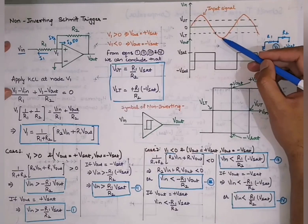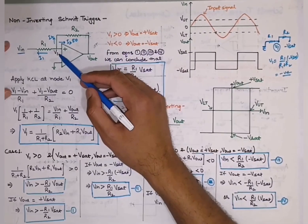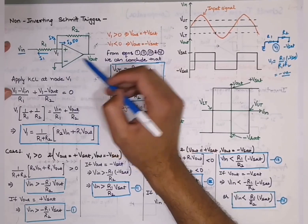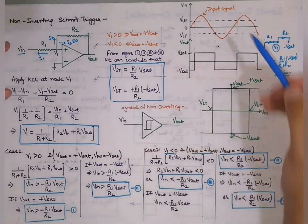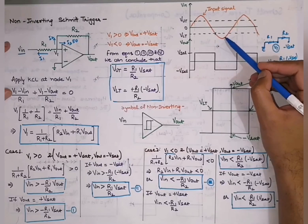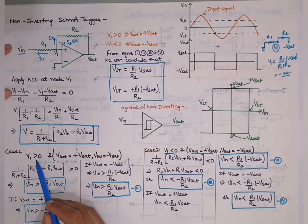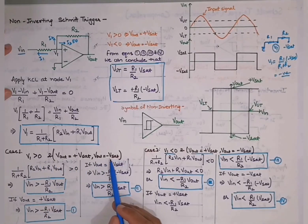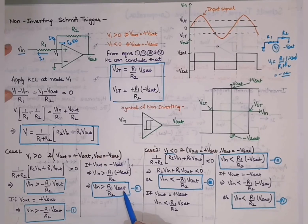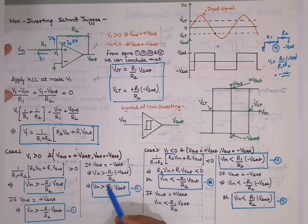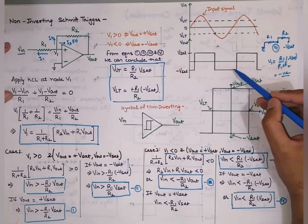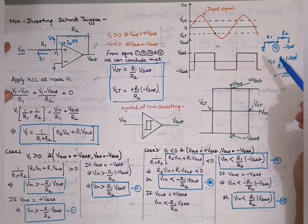After the output reaches −Vsat, for V1 to go back above 0 and Vout to return to +Vsat, the previous Vout is −Vsat. Therefore, the condition is again that Vin must exceed the upper threshold (R1/R2)·Vsat for the transition from −Vsat to +Vsat to occur, and this cycle continues.